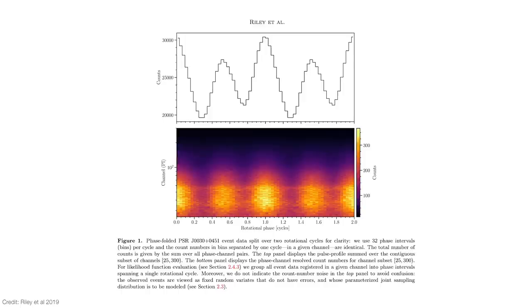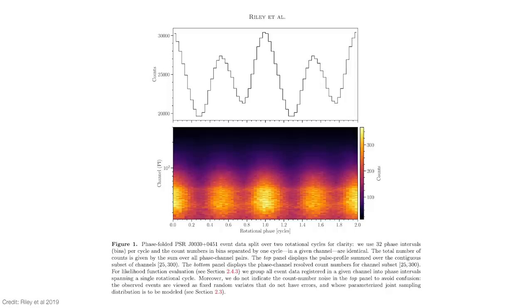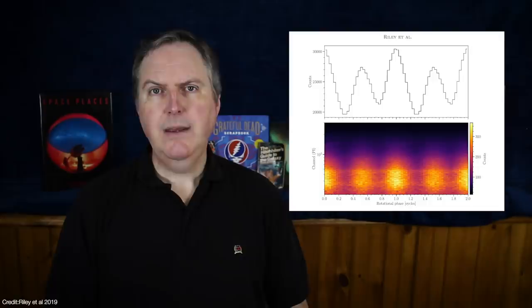Astronomers can use this information to build up a map of the x-ray hotspots on a pulsar and then work backward to model its interior. This is a technique called pulse profile modeling, and in a way it's similar to how geologists use seismic data to model the interior of Earth.